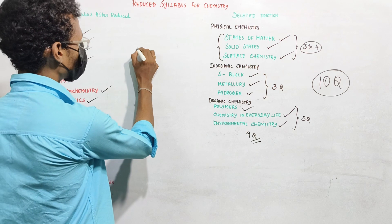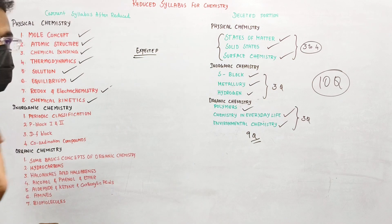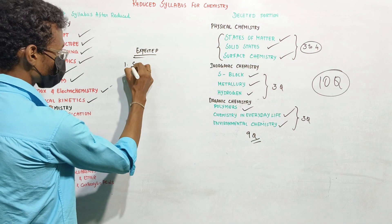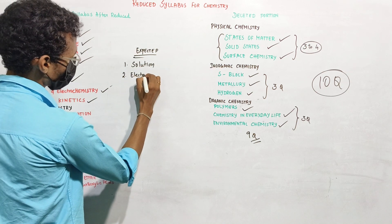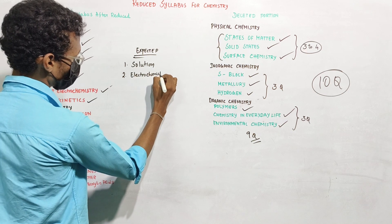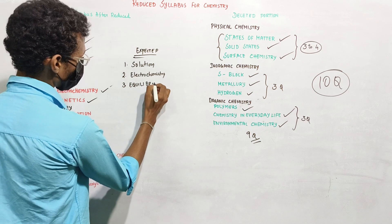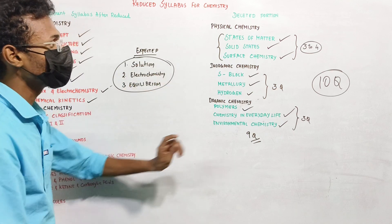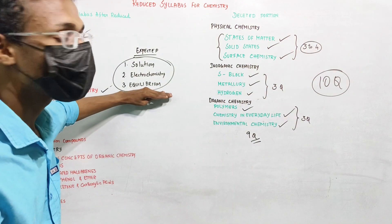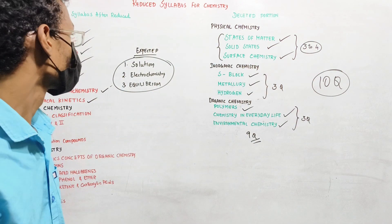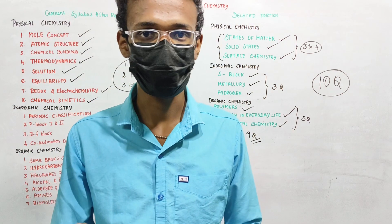From these lessons, the ones most likely to be asked are solution, electrochemistry, and equilibrium. These three lessons give four questions every year — they are the most common in the toughest exam. In NEET 2024, expect four questions from these three lessons.